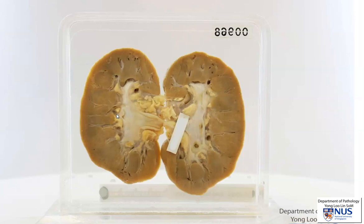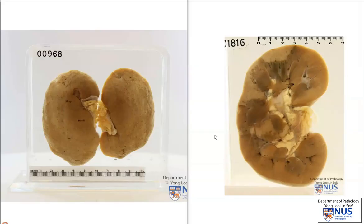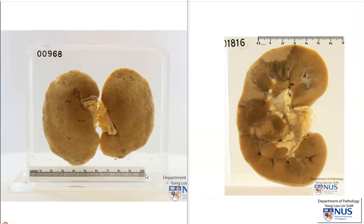So this is an example of an end-stage kidney. Let's compare this to another kidney. Here is a side-by-side comparison. This is not a normal kidney — it is a kidney showing the presence of renal infarcts. But the size is more or less normal, and I put the scale at roughly similar sizes. You can see the stark difference in size. End-stage kidney is usually small and shrunken.